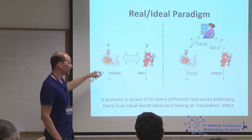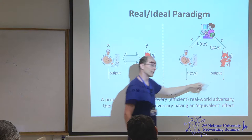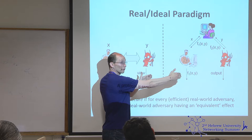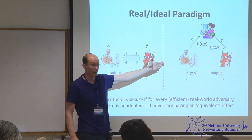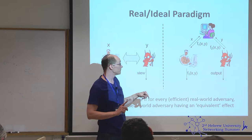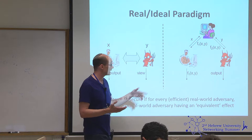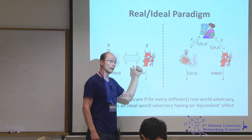We say this protocol is secure if for every efficient real-world attacker there's an ideal-world attacker that has the same effect — the joint distribution of the output and the view in the real world is indistinguishable from the distribution in the ideal world. In the ideal world, the attacker can send an input of its choice to the trusted party and gets the result it's supposed to get, but it's not learning anything about the honest party's input x beyond what it can derive from f2(x,y). It also can't influence correctness other than substituting its own input value y.